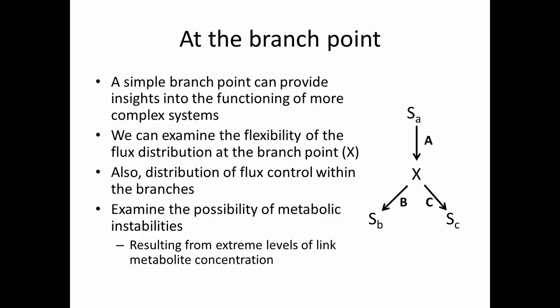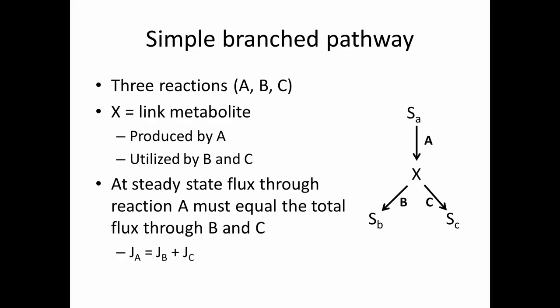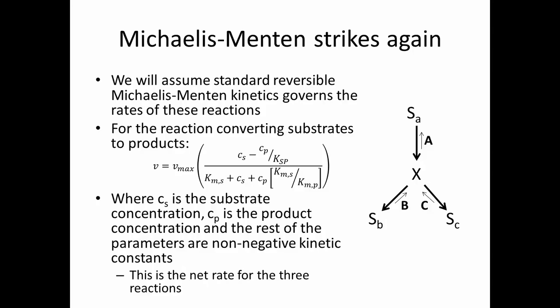Extreme levels of link metabolite concentration — how is that going to affect the reactions above it that make X, and how is it going to affect the reactions that consume X? We have this simple branch pathway with three reactions: A, B, and C. X is the link metabolite produced by reaction A and utilized by reactions B and C. At steady state, the flux through reaction A must equal the total flux through B and C, so JA equals JB plus JC. This is a basic concept we've discussed since day one. We will assume standard reversible Michaelis-Menten kinetics governs the rate of these reactions.